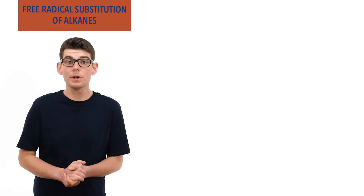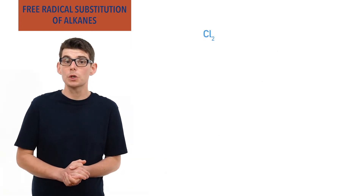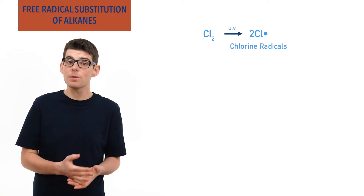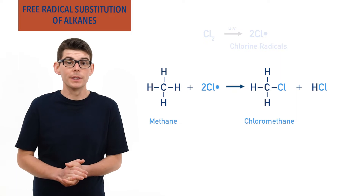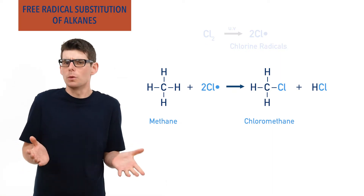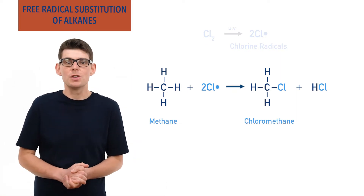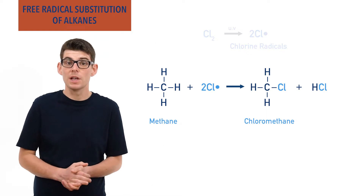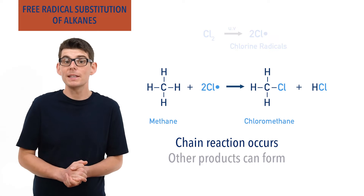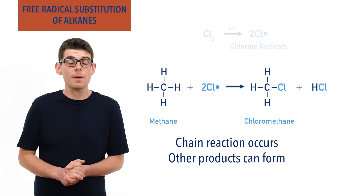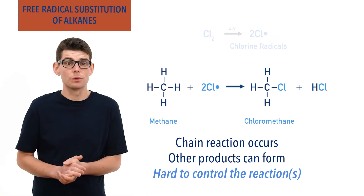For example, a chlorine molecule, Cl2, breaks apart to form two chlorine radicals and then reacts with methane to form chloromethane and hydrogen chloride. In the real world, these reactions are very messy due to the high reactivity of radicals and a chain reaction forms. Other products get made and further substitution reactions can occur, making the reactions very hard to control.